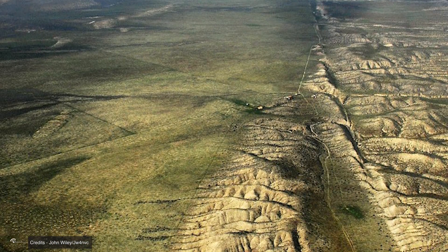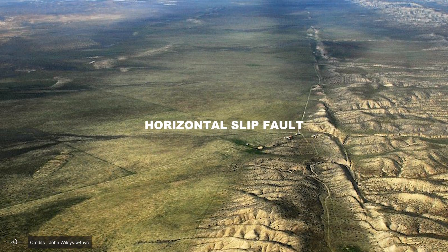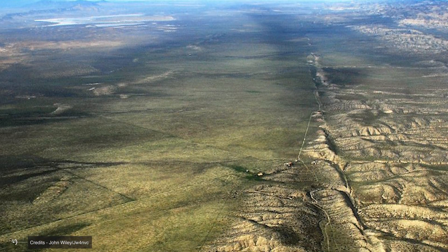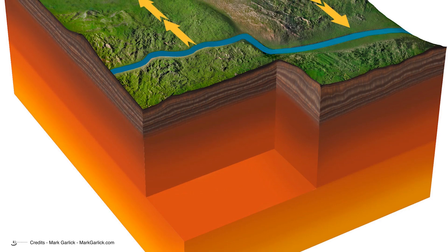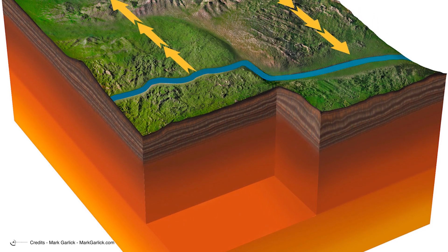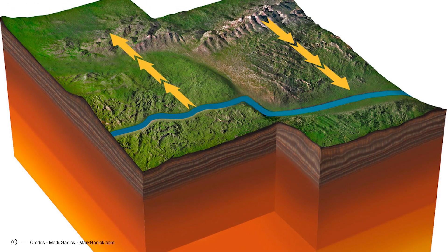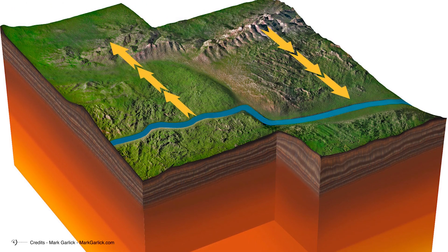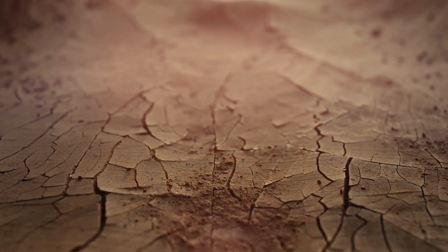The San Andreas Fault is a classic example of a horizontal slip fault, also known as a strike fault. In this type of fault, the tectonic plates move laterally with respect to each other instead of vertically. This lateral movement is the main mechanism that gives rise to earthquakes along the fault. When the accumulated stress exceeds the resistance of the rocks, it is abruptly released in the form of an earthquake.